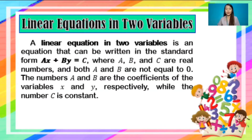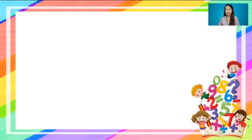A linear equation in two variables is an equation that can be written in the standard form ax plus by equals c, where a, b, and c are real numbers, and both a and b are not equal to zero. The numbers a and b are the coefficients of the variables x and y respectively, while the number c is constant.